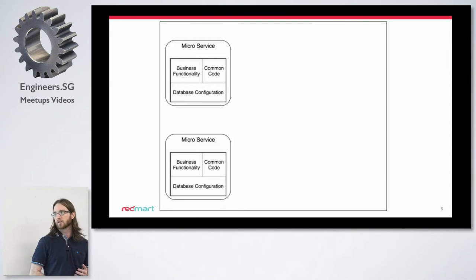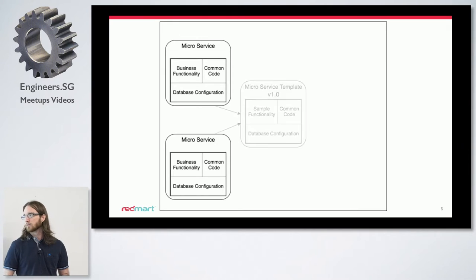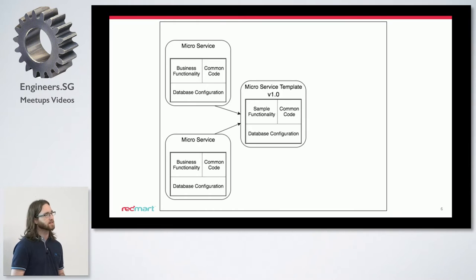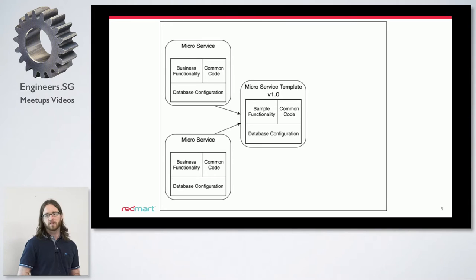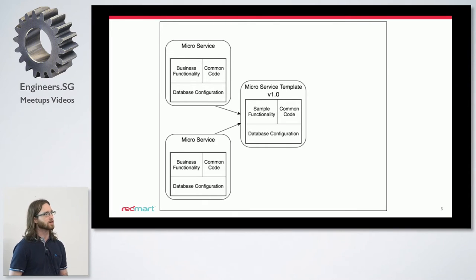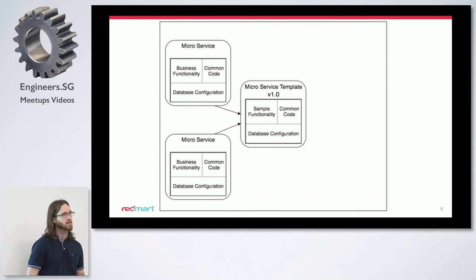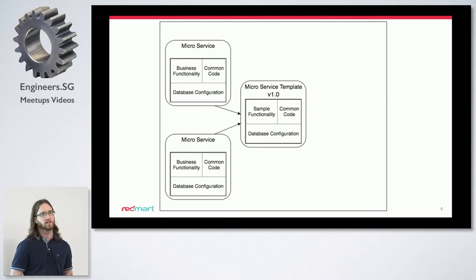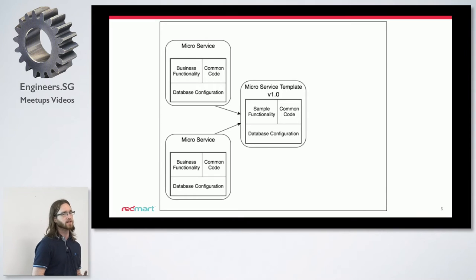So we looked at the microservices that we'd created and we combined them into the first version of the microservice template. This had, instead of actual business functionality, just some sample functionality to get you started. It had references to the common code, a lot of the third-party libraries that we were using, and stable versions of the latest continuous integration and server setup scripts. But this still had a problem — when we would make changes to the microservice template, it was really difficult to make sure that those changes propagated to other services that we'd already created from the microservice template.